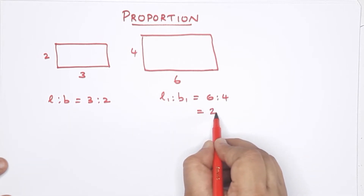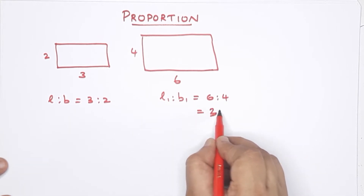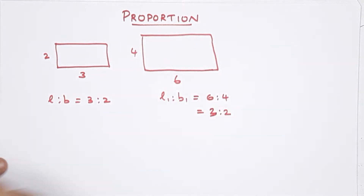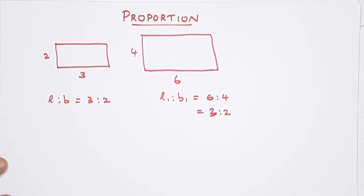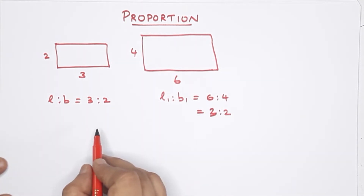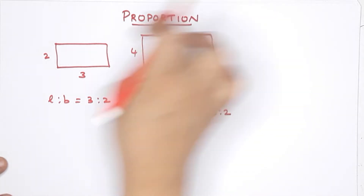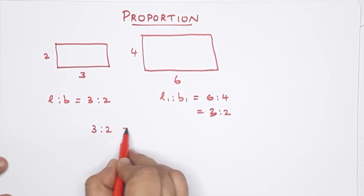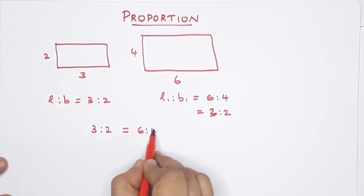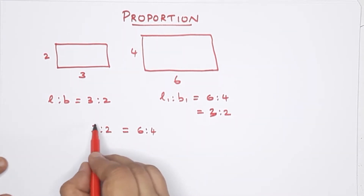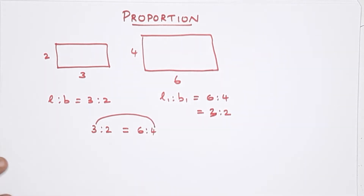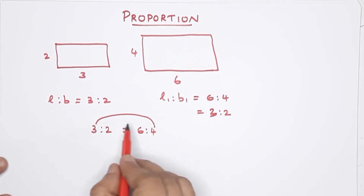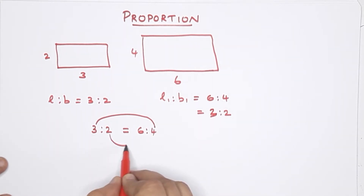We call these two rectangles in proportion. We call it equal ratio. Equal ratio is the proportion. This is 3 is to 2, that is equal to 6 is to 4. We call the outer terms extremes, and the inner terms means.